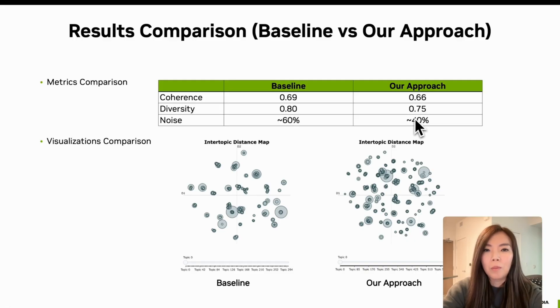This table shows the comparison of all three metrics. In this experimentation, although the coherence and diversity scores decreased slightly, the noise percentage was reduced substantially. This decrease in noise indicates that our approach effectively balances the three metrics, prioritizing a cleaner, more interpretable topic structure without heavily compromising coherence or diversity.